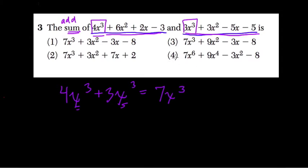And already by trying that first combination, we can cross out 4 because notice it says 7x to the sixth, but we know the first term needs to be 7x to the third. So we're almost done.